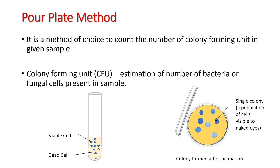The pour plate technique is a method in which molten agar is poured into a petri dish. It is the method of choice to count the number of colony forming units in a given liquid sample.